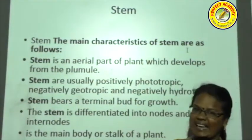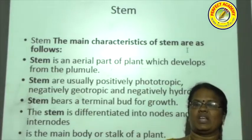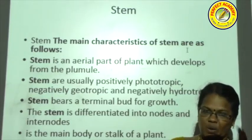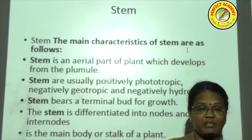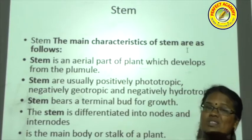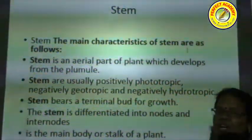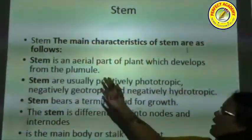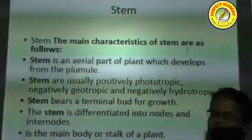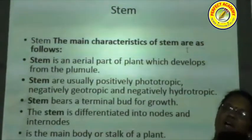The first characteristic feature: the stem is an aerial part because it grows above the soil — it is positively phototropic. This depends on tropism, where plastids also play a vital role. In contrast, the root is positively geotropic. The stem grows toward light because it possesses chloroplasts. The stem develops from the plumule region and is positively phototropic and negatively geotropic.